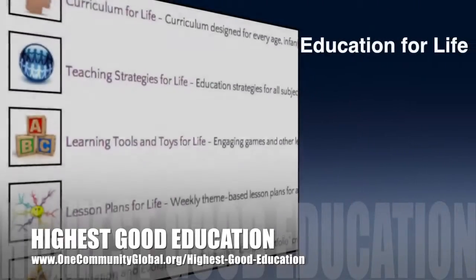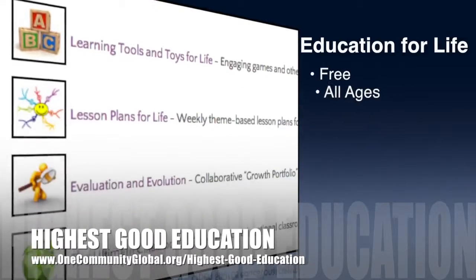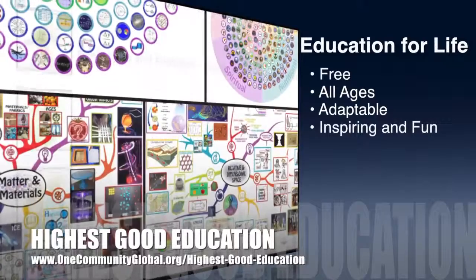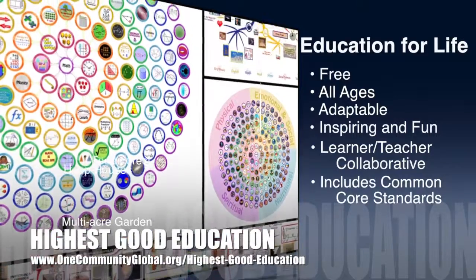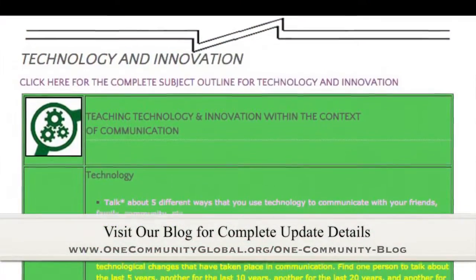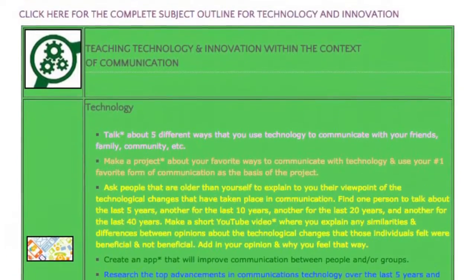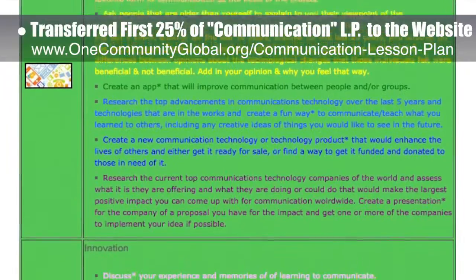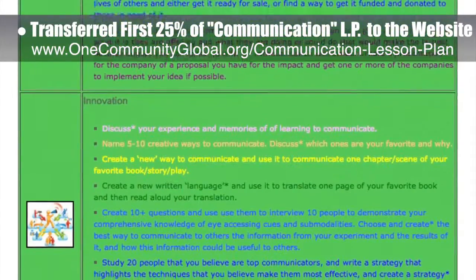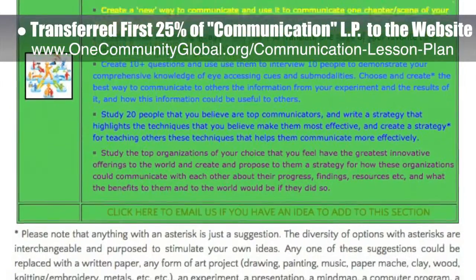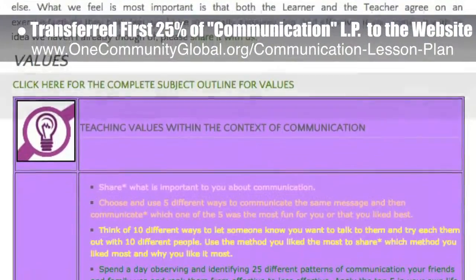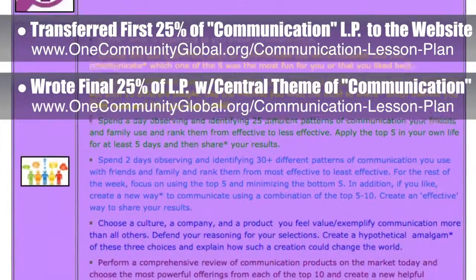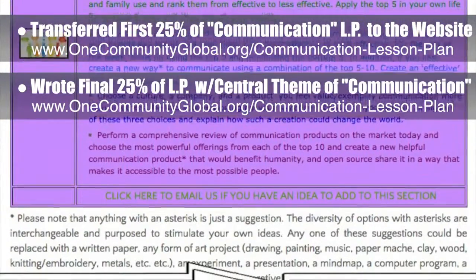One Community's approach to highest good education is open source and free shared design for all age groups, adaptable to any schooling environment, inspiring and fun for all participants, a learner-teacher collaborative, and includes US Common Core standards. This week, the core team transferred the first 25 percent of the content for the communication lesson plan to the website, including all the icons and some of the written content. Behind the scenes, we also wrote the final 25 percent of the lesson plan, bringing us to 100 percent complete on the writing aspect.